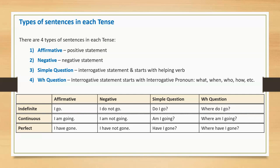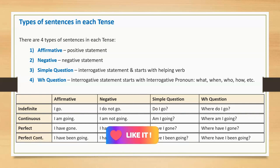Present perfect affirmative: I have gone. Negative: I have not gone. Simple question: have I gone? WH question: where have I gone?